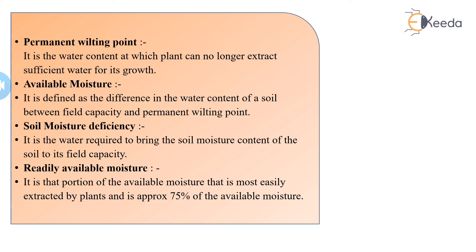If this question is asked for term marks, you have to write down all these points — from the gravity water definition up to readily available moisture — including the diagram of the soil moisture irrigation relationship. We studied the quality of irrigation water and the soil characteristics needed for better crop production, and how these two parameters relate to each other. I hope you have understood this subtopic: soil moisture irrigation relationship.